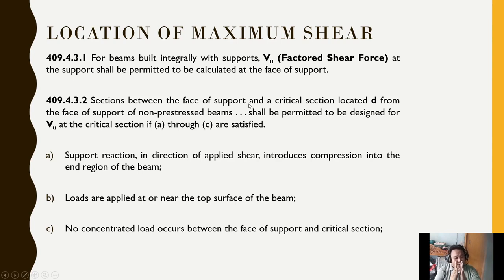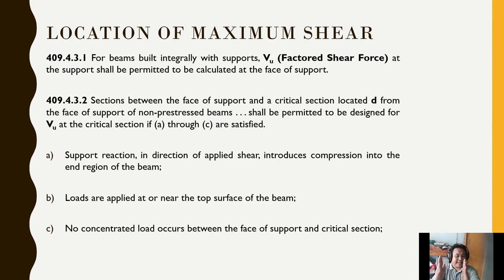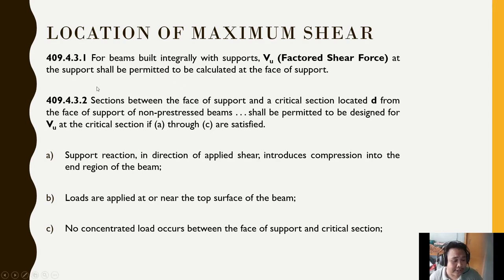You may offset VU by distance D — the depth of the beam — if three conditions are satisfied. Condition 1: Support reaction introduces compression in the direction of applied shear — arc action is present. Condition 2: Loads are applied at or near the top surface of the beam. Condition 3: No concentrated load exists between the face of support and the critical section. If all three are satisfied, we move the critical section by D from the face.